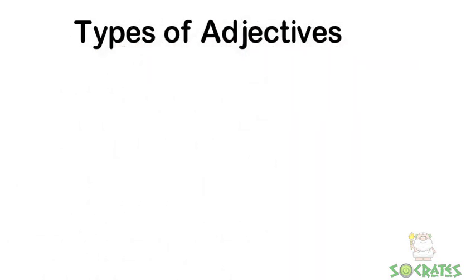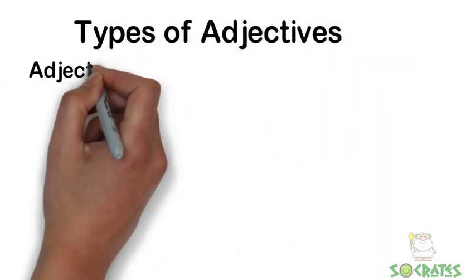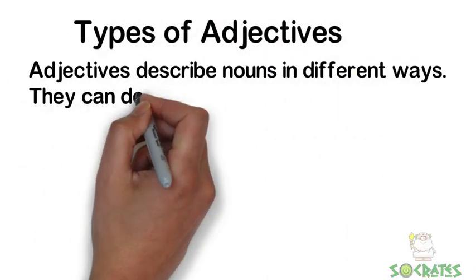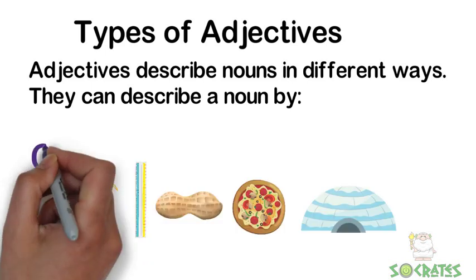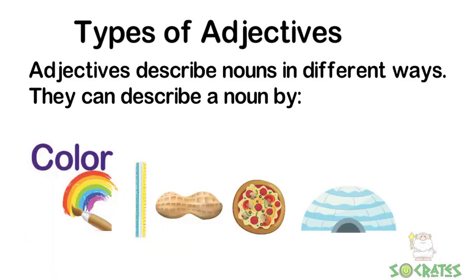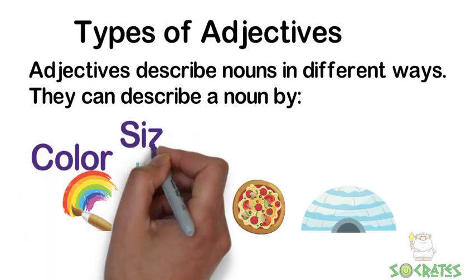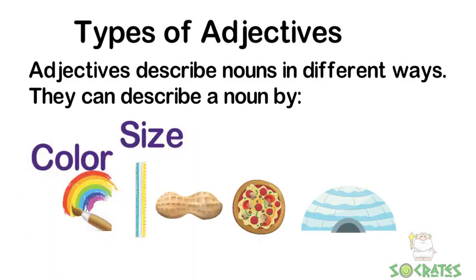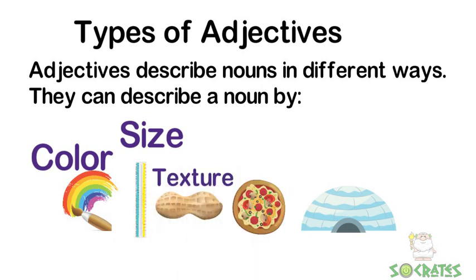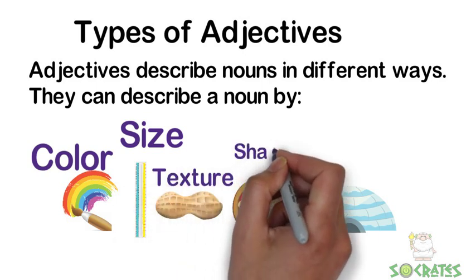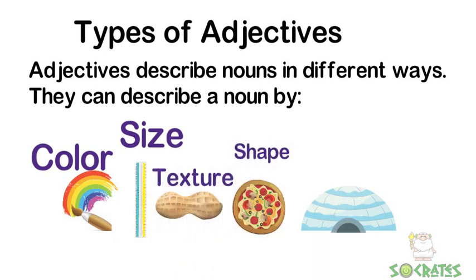Types of adjectives. Adjectives describe nouns in different ways. They can describe a noun by color, size, texture, shape, or their quality.